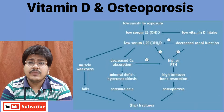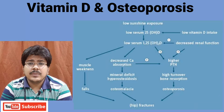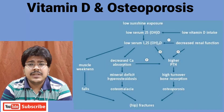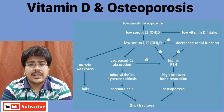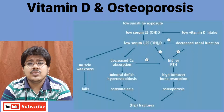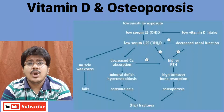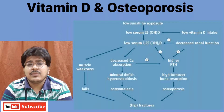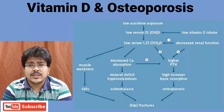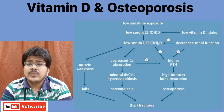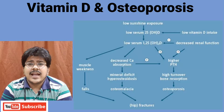Vitamin D is very important for osteoporosis prevention. The main source of vitamin D is sunlight, and we get only a limited amount from diet. When vitamin D levels in our body decrease, there is decreased calcium absorption, which leads to increased parathyroid hormone, which increases resorption of calcium from the bones, leading to osteoporosis. This can also cause muscle weakness and fractures.